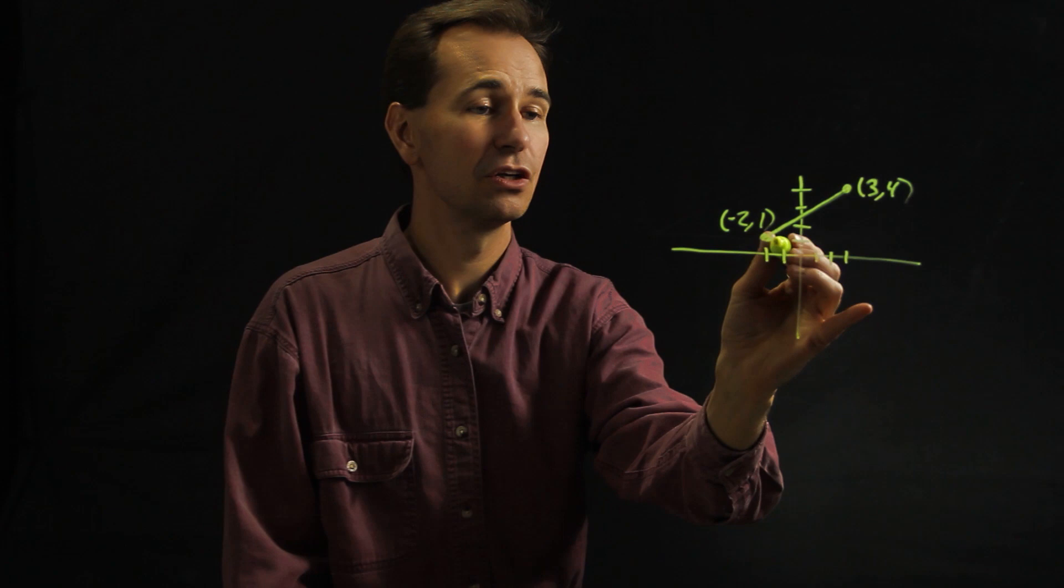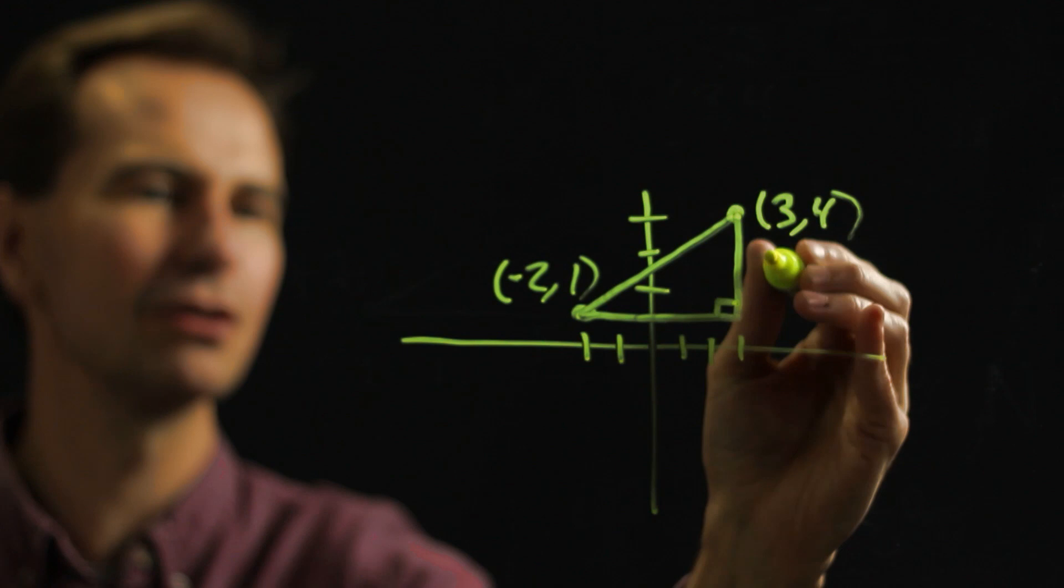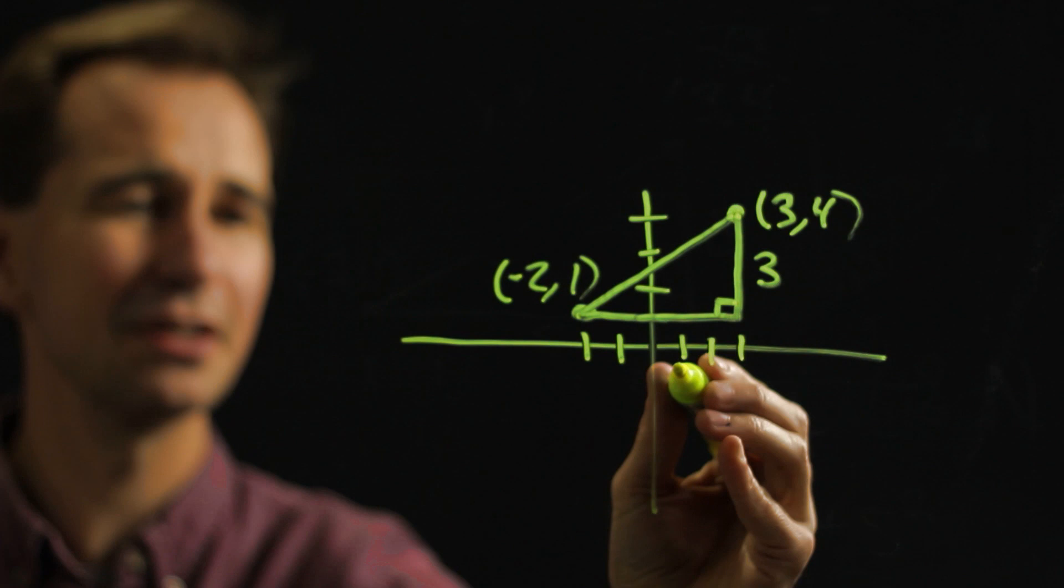You can draw a line straight across and then straight up and make a right triangle. And then you notice that this side of that right triangle has a length of three, and this side of that right triangle has a length of five.